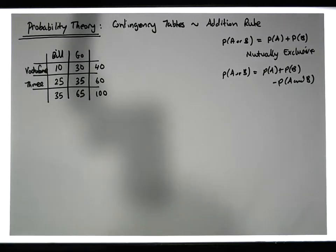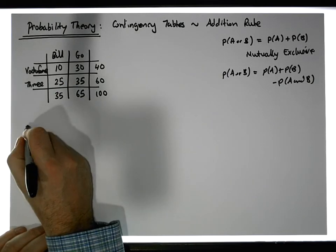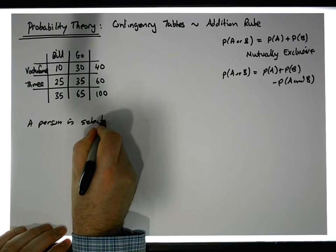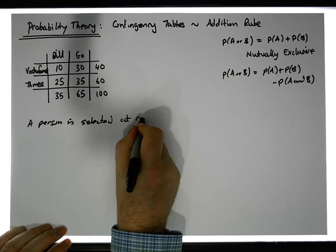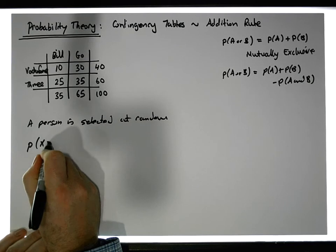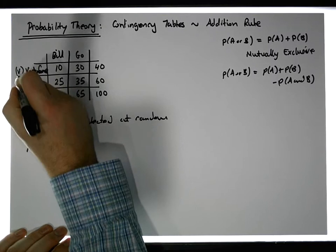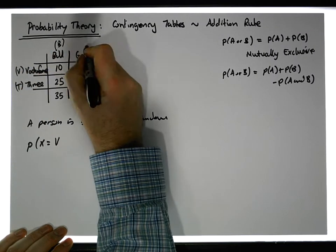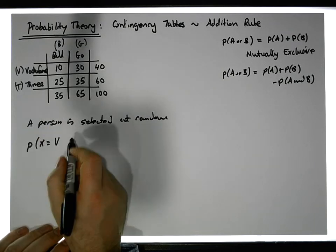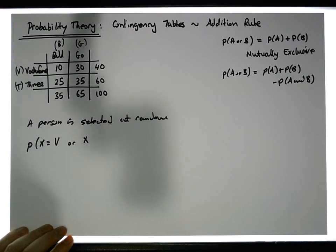So there's two versions of the rule. Let's say for argument's sake that we select a person at random. What we want to know is what's the probability that the person selected is a Vodafone customer or a Three customer. This is probably a bad example because...